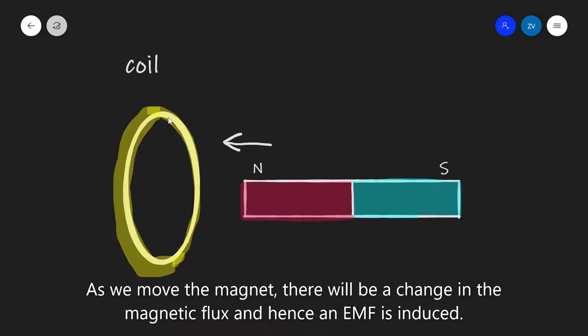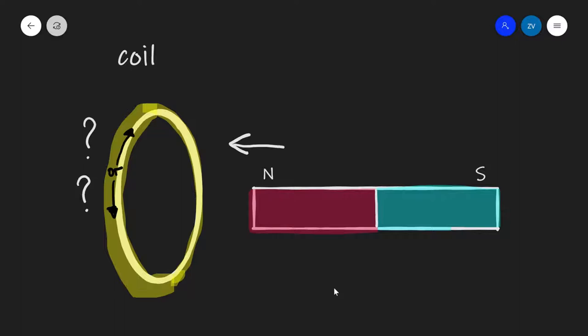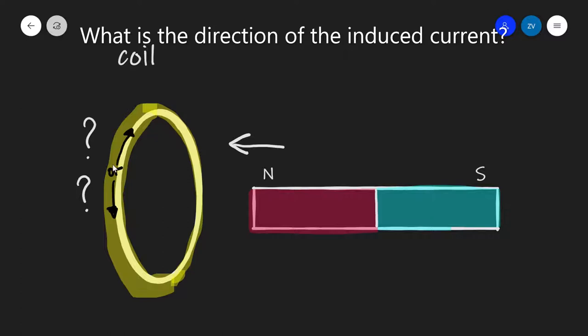Now the question is, once we have an induced current in the coil because of Faraday's Law, because the rate of change of magnetic flux is changing and that's inducing the EMF, which way will the induced current go? Is it going to go this way or is it going to go that way? And this is where Lenz's Law tells us the direction of the induced current.